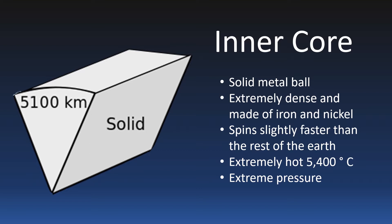It is mostly made of iron and nickel. The inner core spins slightly faster than the rest of the planet and it is intensely hot. The temperatures can reach 5,400 degrees Celsius and it is almost as hot as the surface of the sun.